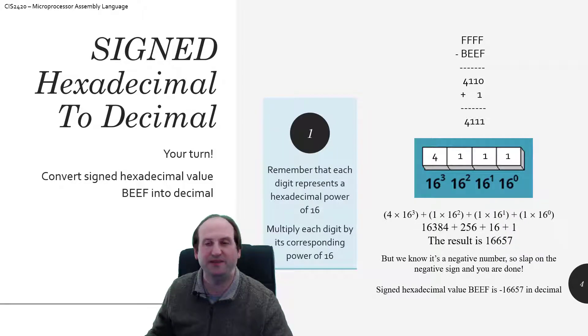I know that BEEF is a negative number in hexadecimal because, first off, you told me it was a signed value, and second off, I checked, and B, because that is the A to F range of values, that has to be a leading, most significant bit of 1.